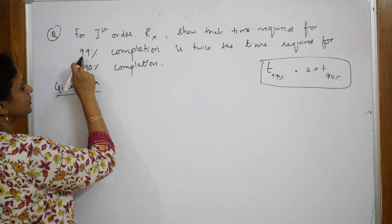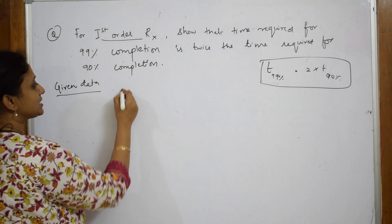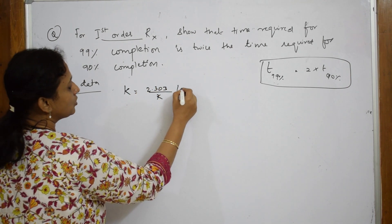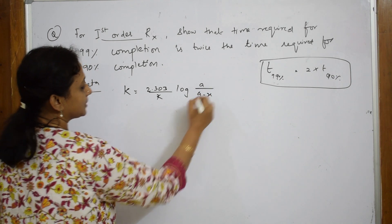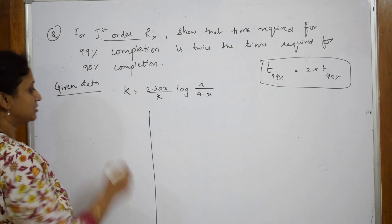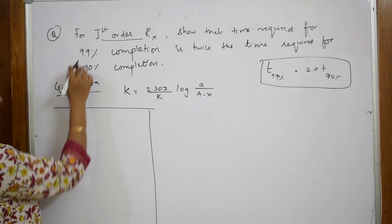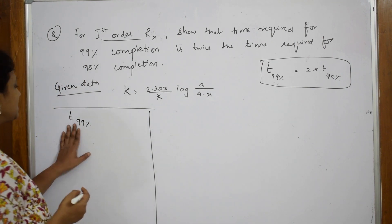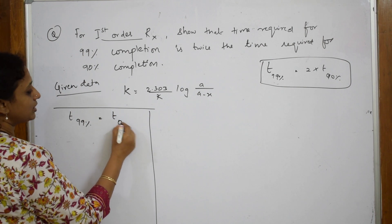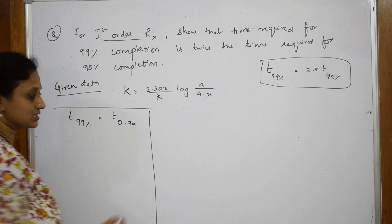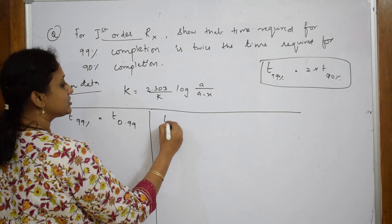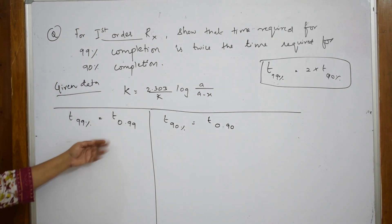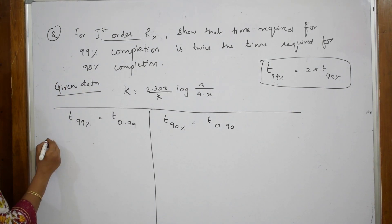Now I am going to apply this to the first order equation: t is equal to 2.303 by k, log a by (a minus x). I have two conditions. For the first condition, 99 percent completion — let us name this time t(0.99). For the second condition, 90 percent completion — let us take this as t(0.90).